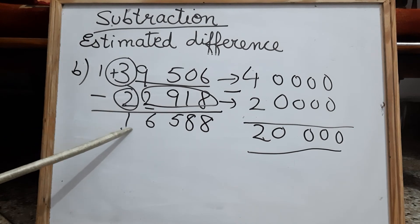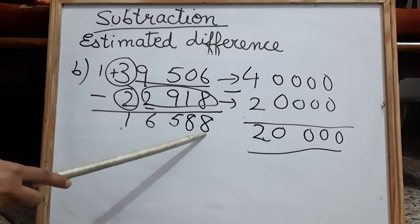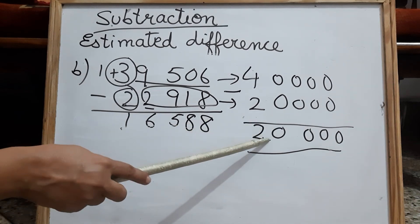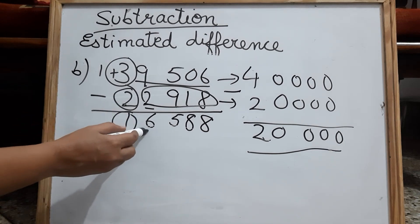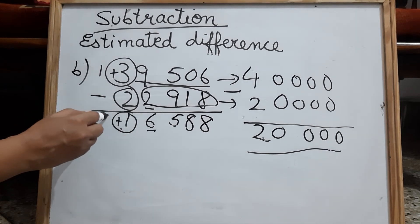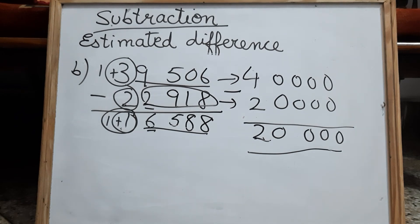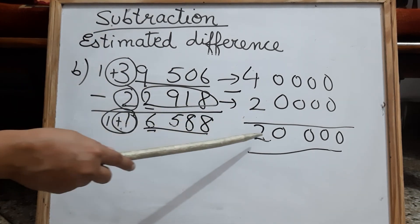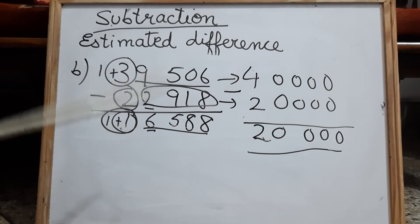Children, if you see here, the actual difference 16,588 is estimated to 20,000. You can also check this very easily — whether your estimated difference is correct or not. At the 10,000 place, the next digit is more than 5, so plus 1 in the required place, it becomes 2, and the rest of the 4 digits become 0. So you can check yourself after finding the actual difference, whether your estimated difference is exactly according to the actual difference.